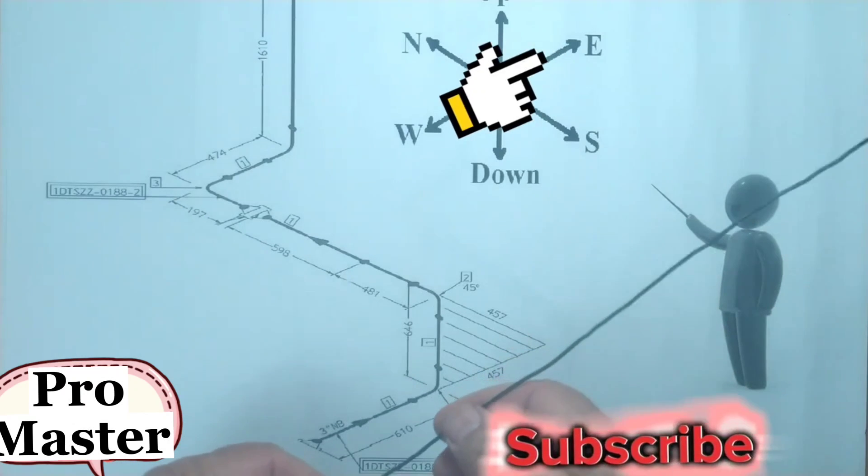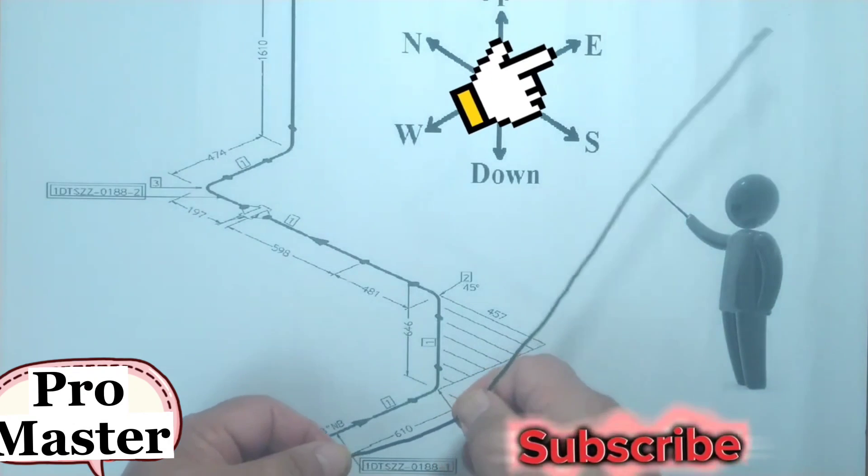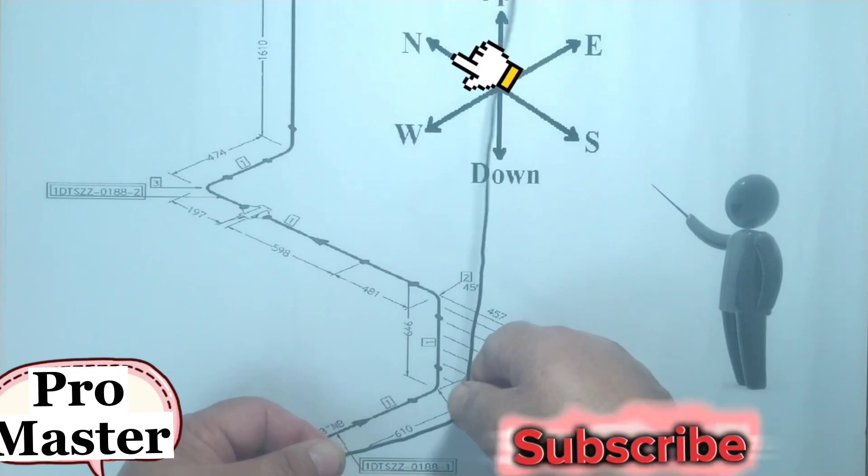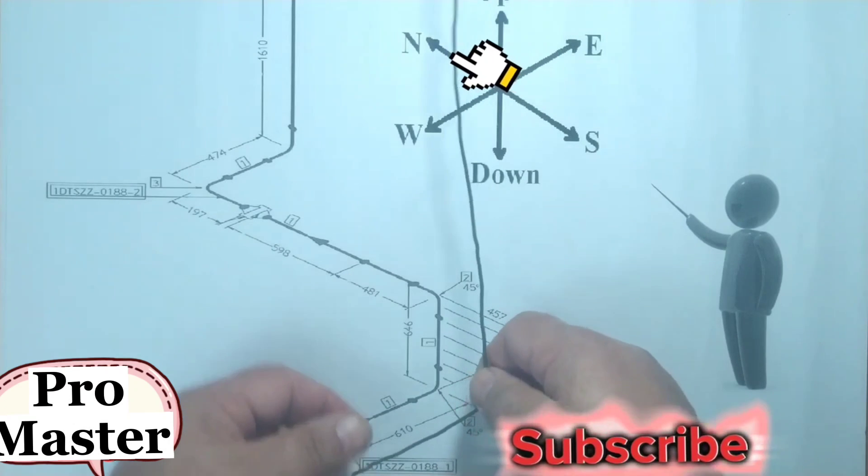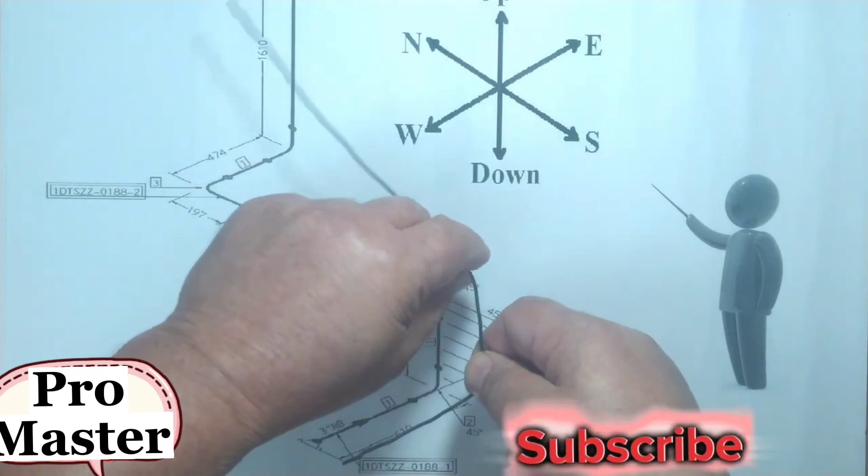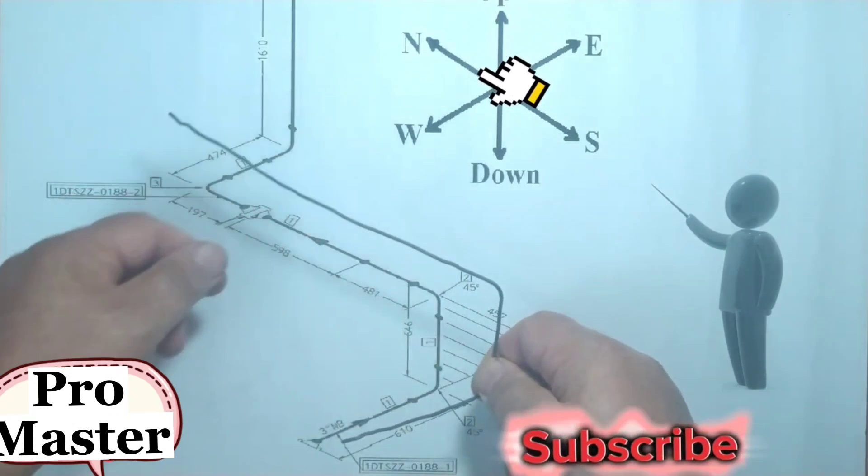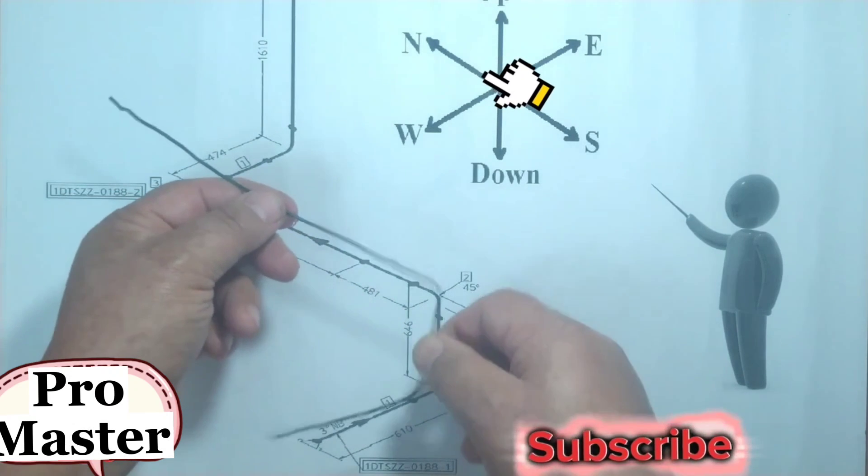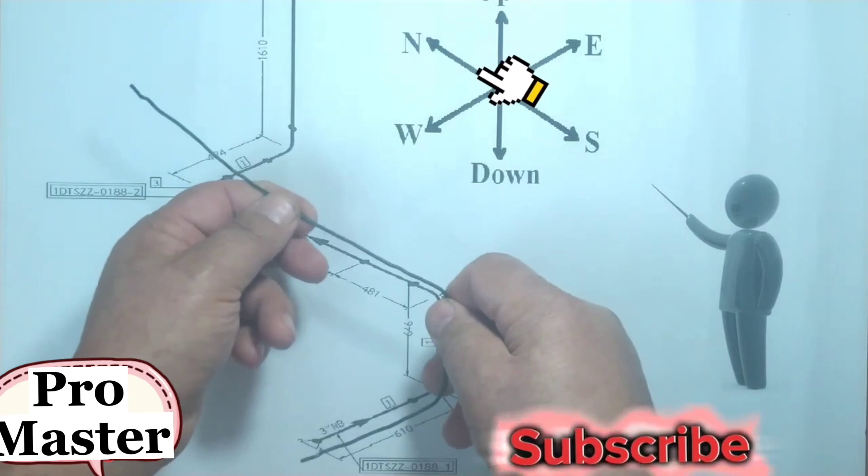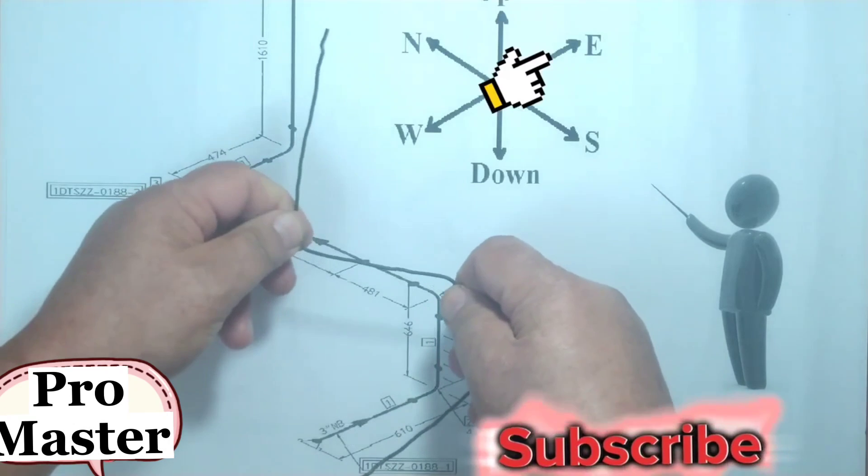Since the pipeline is traveling to the east direction, we hold the wire in the east direction. Then the wire bends to the east direction under 45 degrees. Then the wire continues to the north direction. Then the wire bends to the east direction.